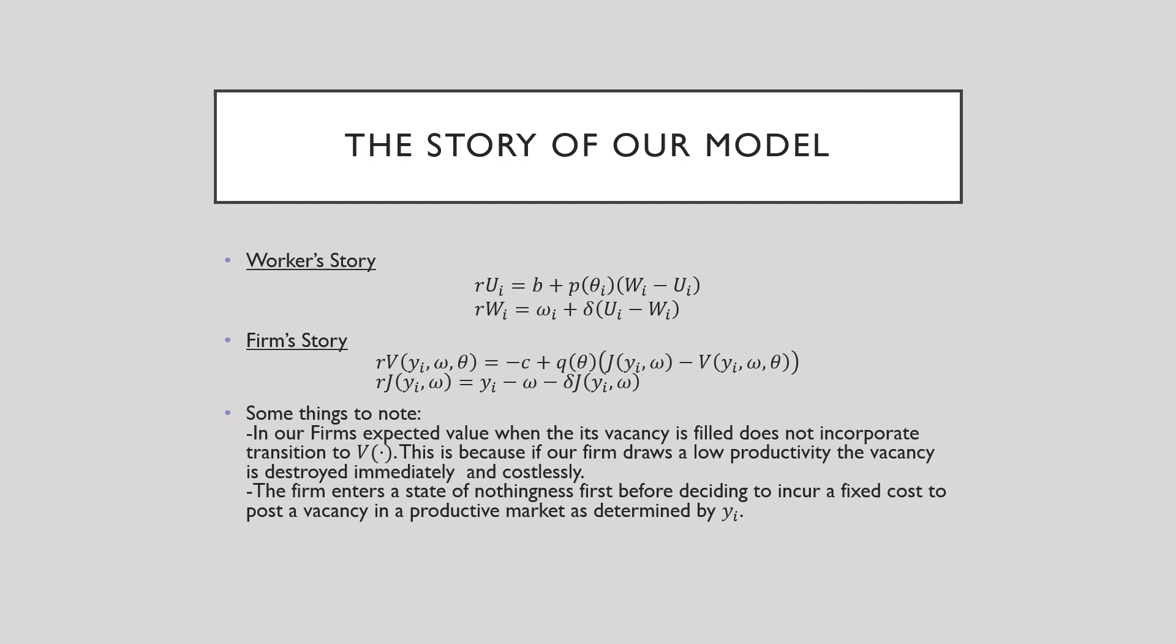For our firm story, we have our vacant bellman and our filled vacancy bellman. For our vacant bellman, our firm pays a cost for maintaining its vacancy plus this probability of transitioning into its employed status and giving up its vacant status. Next we see our employee bellman having its surplus that it gets, which is after it picks up its productivity and pays out the wages, minus this probability of losing its job.